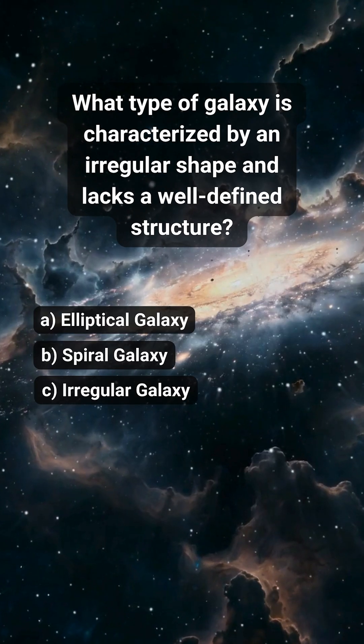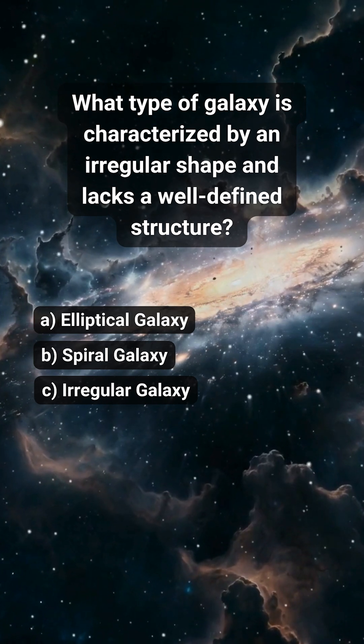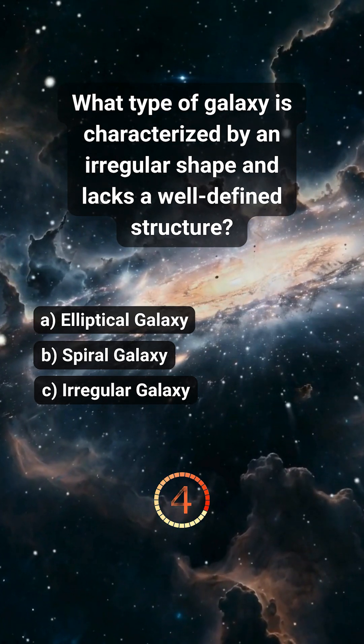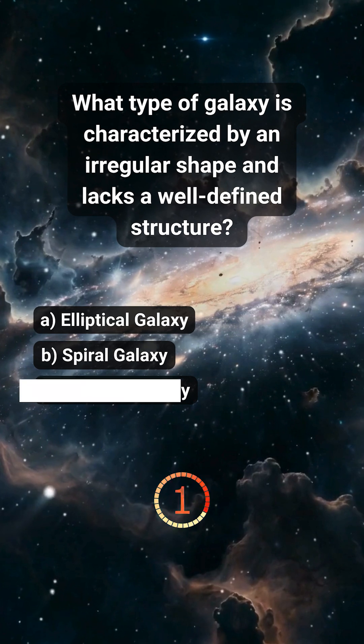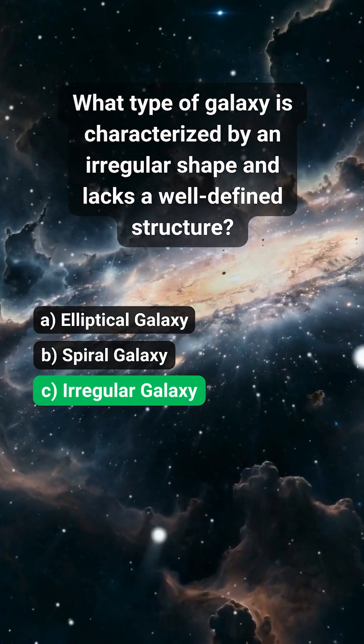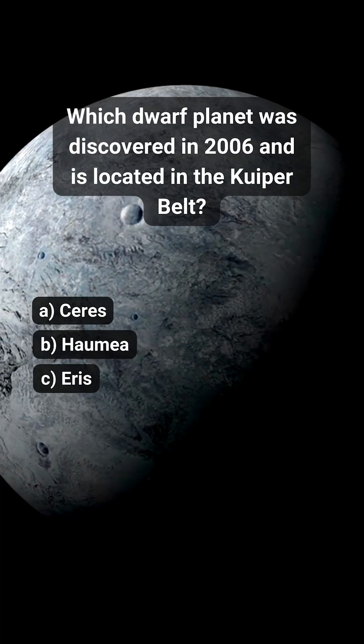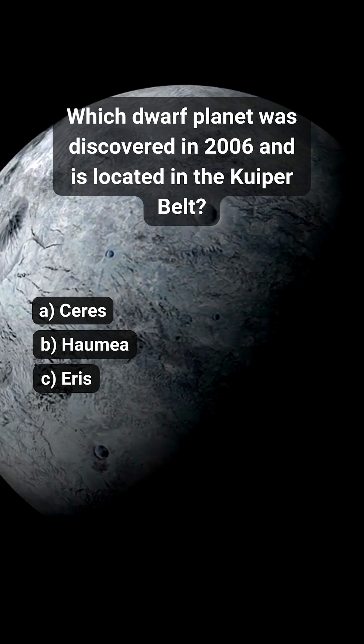What type of galaxy is characterized by an irregular shape and lacks a well-defined structure? C. Irregular galaxy. Which dwarf planet was discovered in 2006 and is located in the Kuiper Belt?